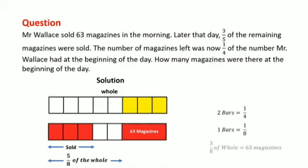So, if three-eighths of the whole is equal to 63 magazines, then this implies that the whole is eight-thirds of 63. And when you do the cancellation, this will be equivalent to 168 magazines.